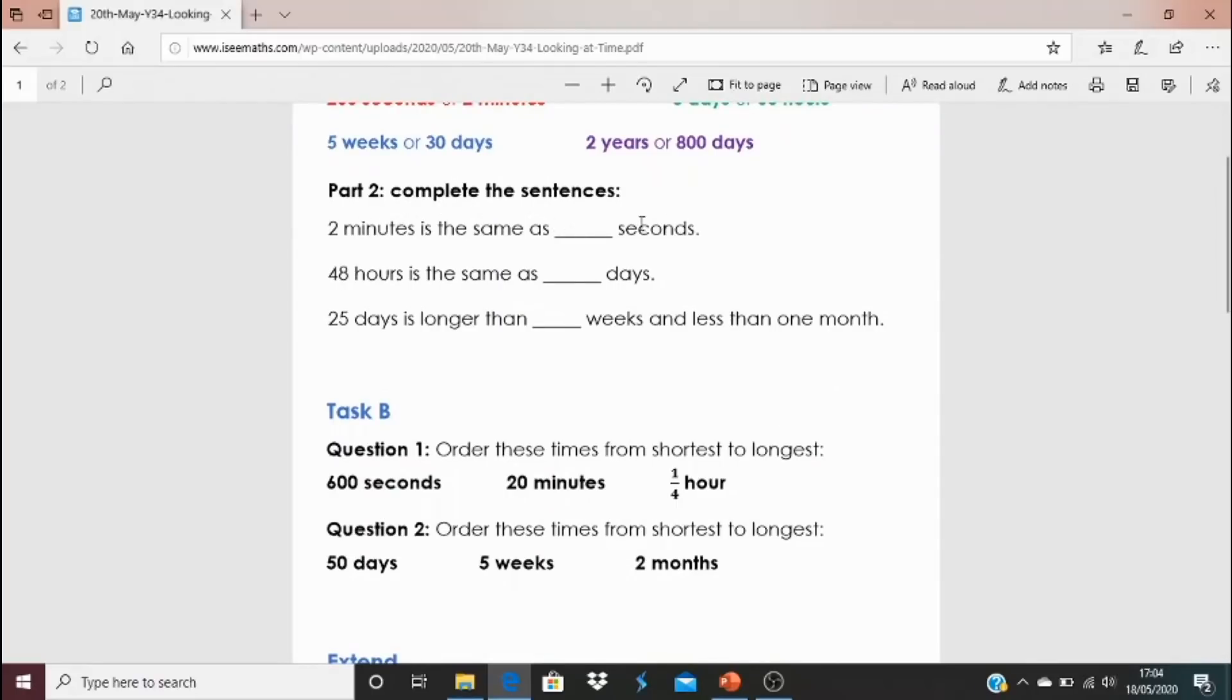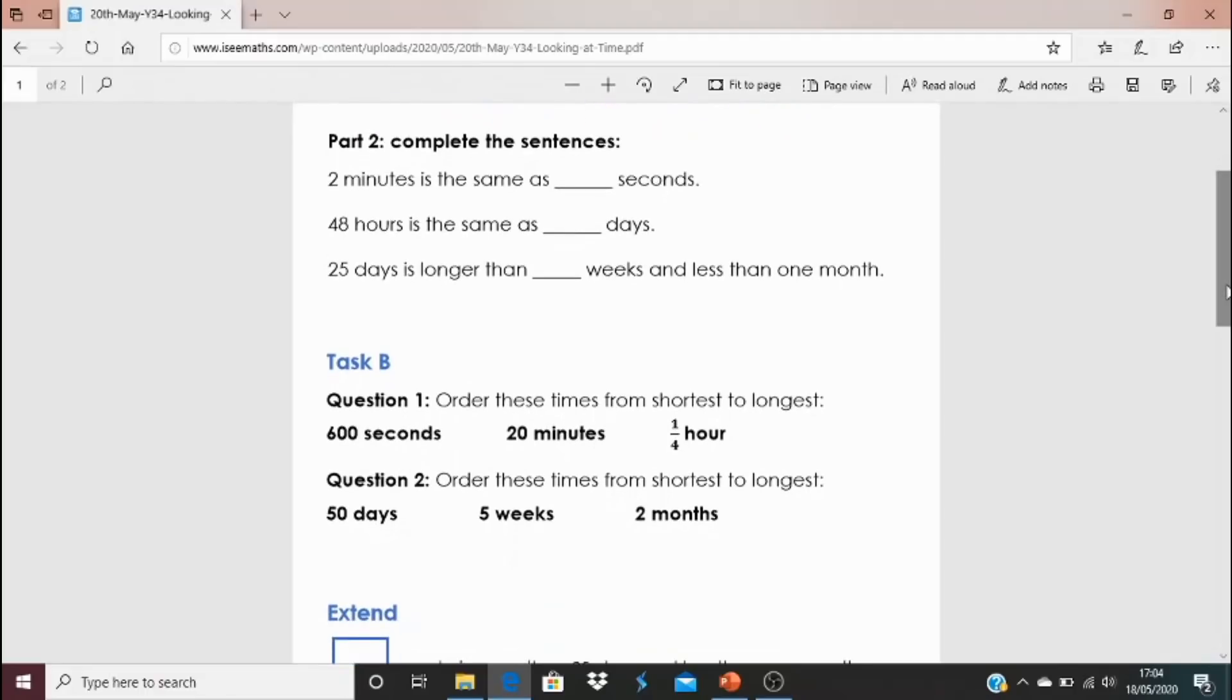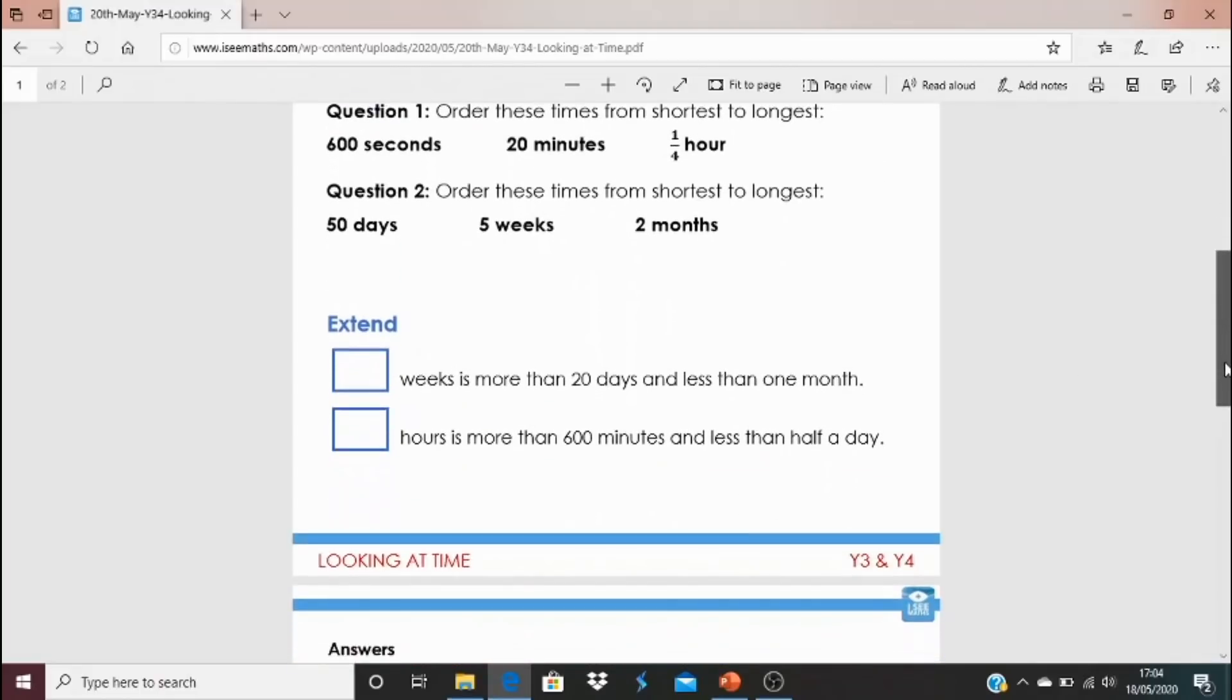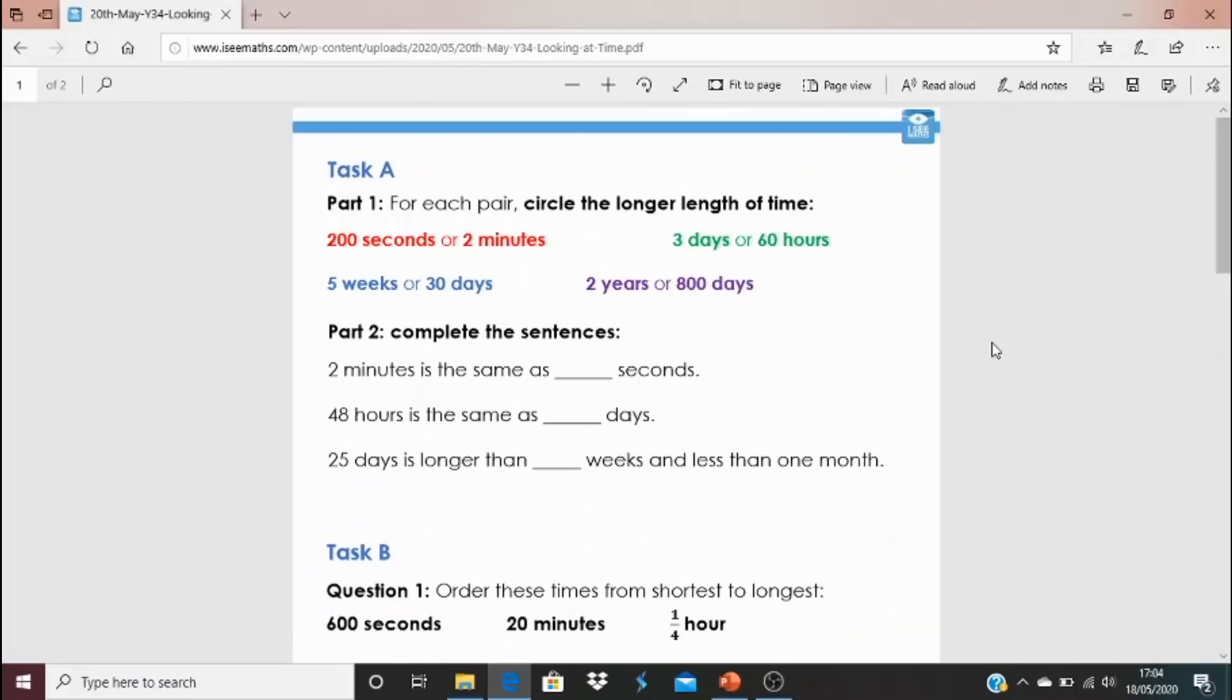Part two: complete the sentences—two minutes is the same as how many seconds, and so on. Task B is similar except these three lengths of time you've got to order them from the shortest length of time to the longest. Have a think about which units you could convert those lengths of time into. There's also an extend task. I'll see you for more work on measures tomorrow.